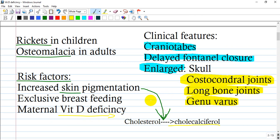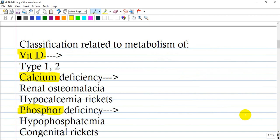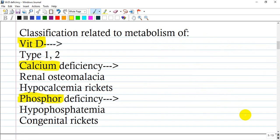Clinical features include craniotabes or delayed fontanel closure, enlarged skull, costochondral joints, enlarged long bone joints, and genu varum deformity. We'll see all these pictures of the disease in the next slides after this classification.